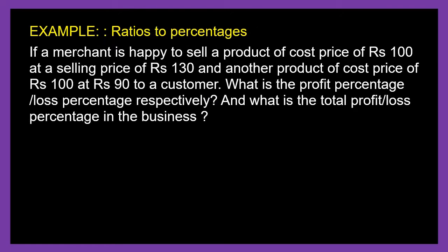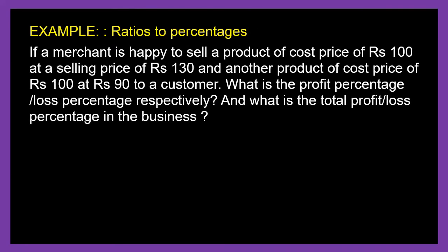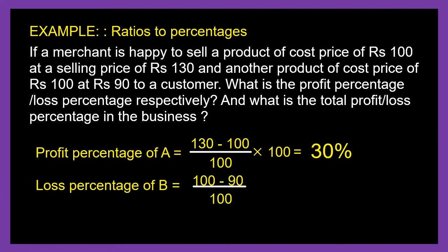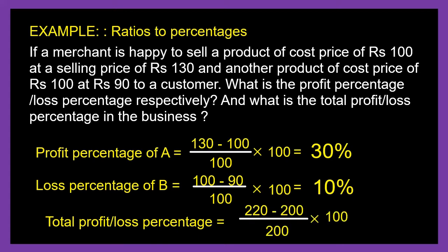Example: A merchant sells one product at a cost price of Rs. 100 at a selling price of Rs. 130, and another product at a cost price of Rs. 100 at a selling price of Rs. 90. The profit percentage of product A equals 30%, since profit expressed in terms of cost price of 100 gives 30. For product B, the loss percentage is 10%. The total selling price exceeds the total cost price by Rs. 20, and expressed as a percentage of the total cost price of 200, we get an overall profit percentage of 10%.